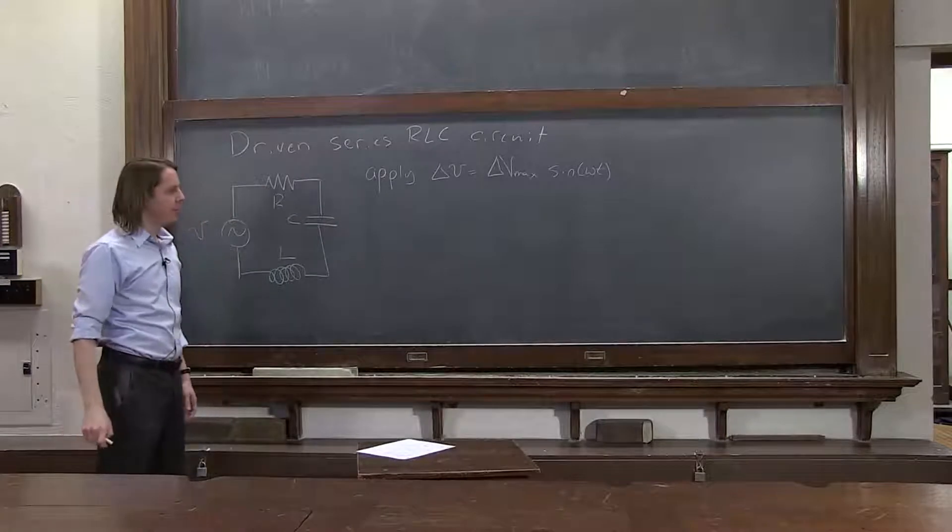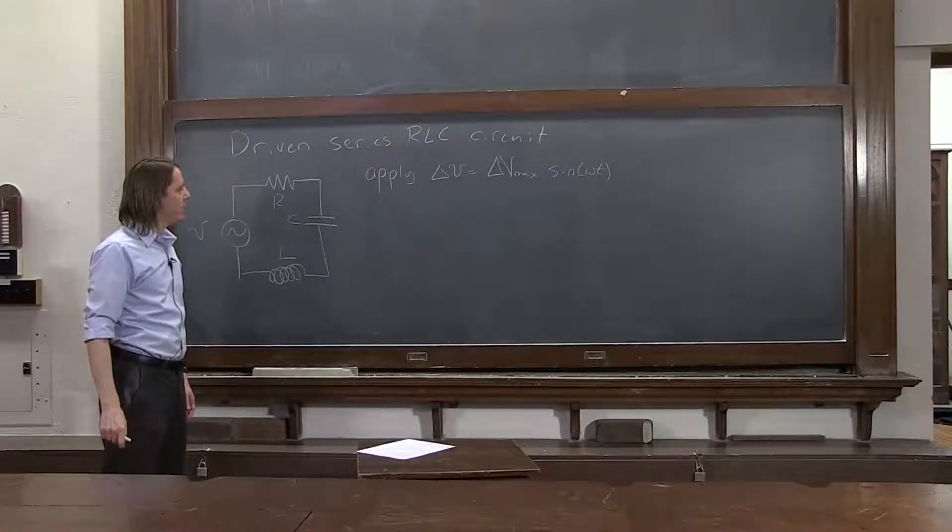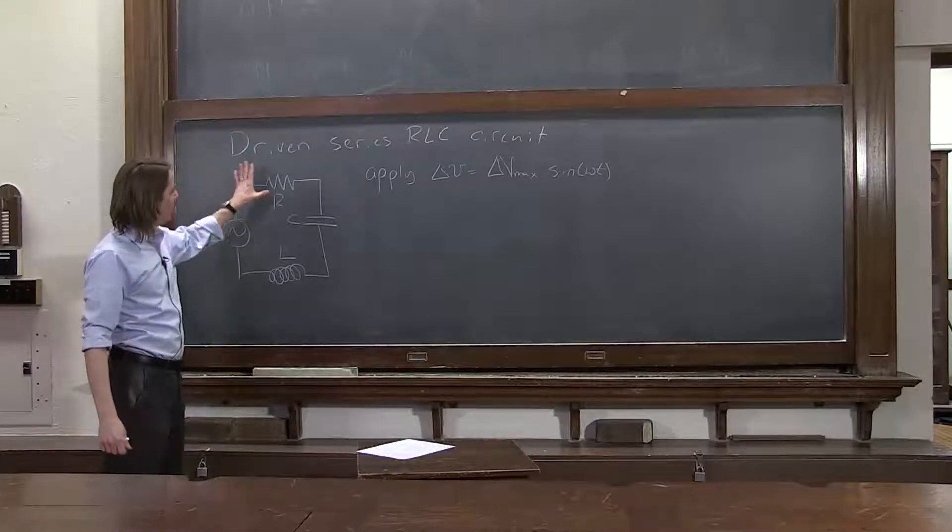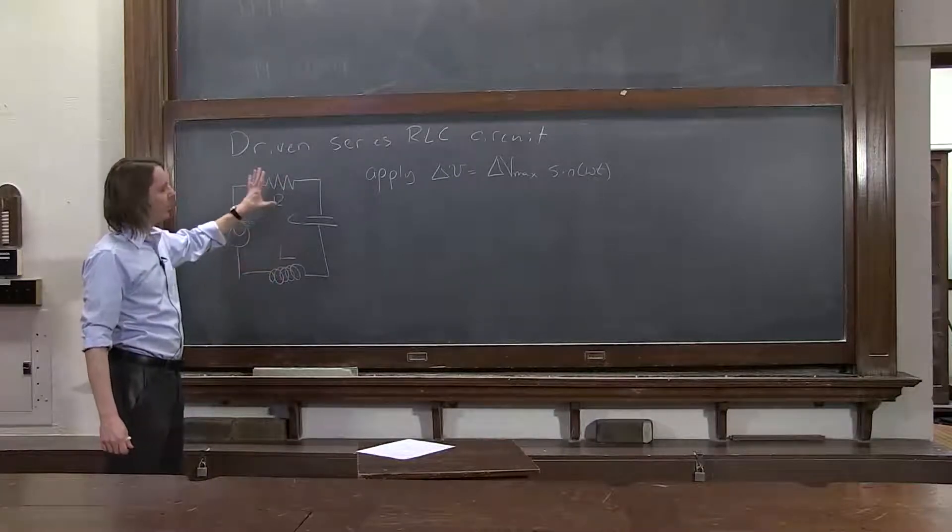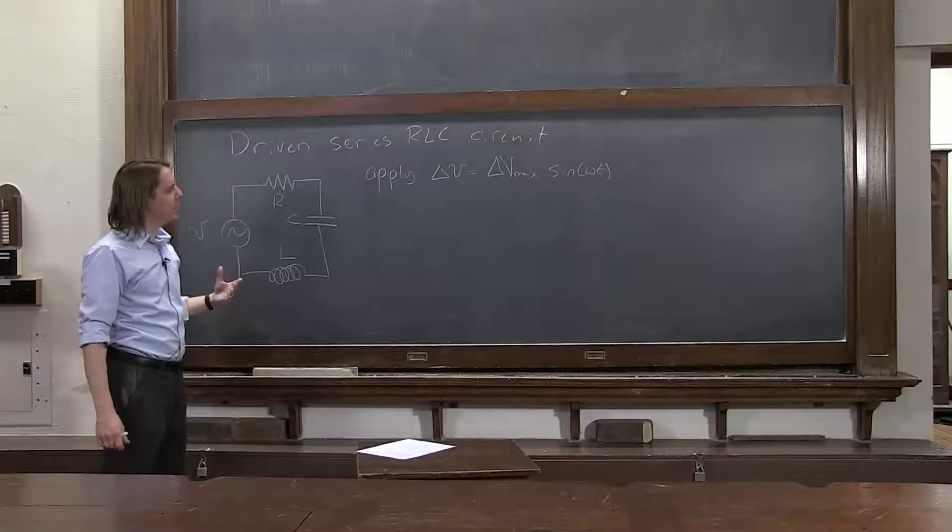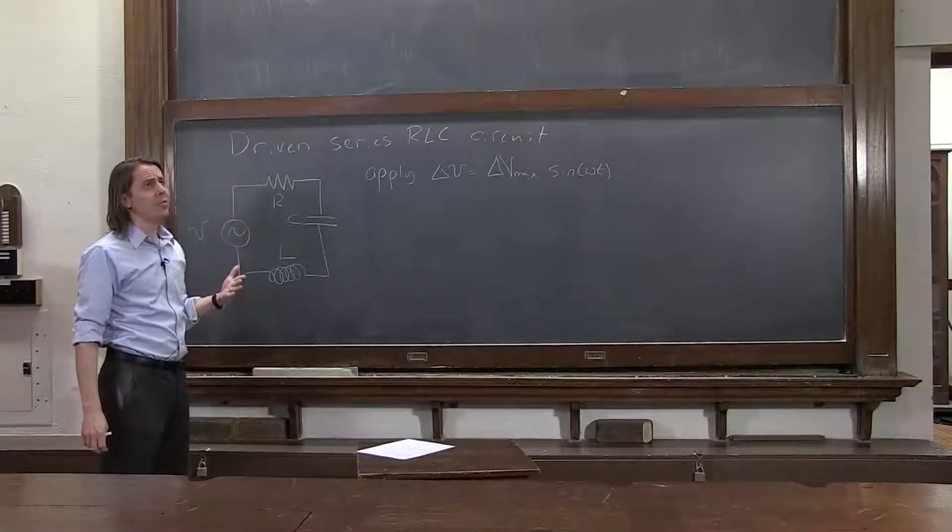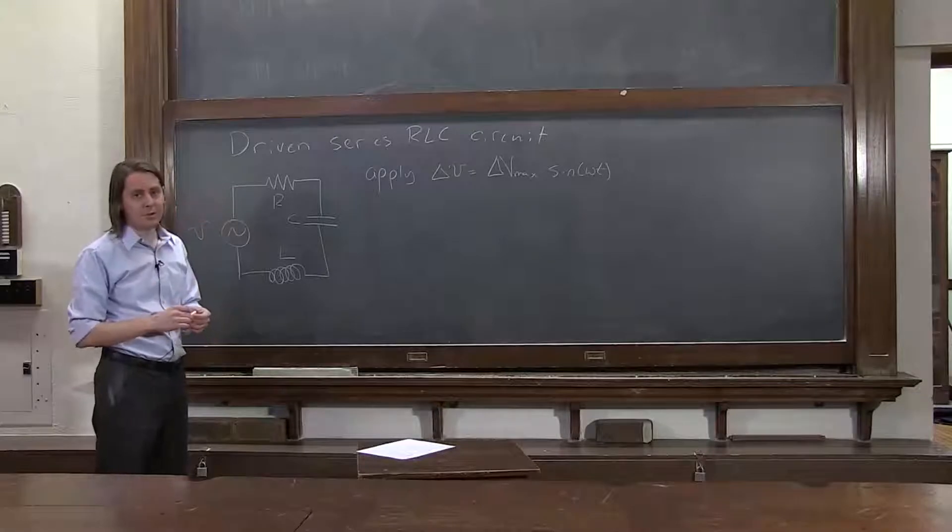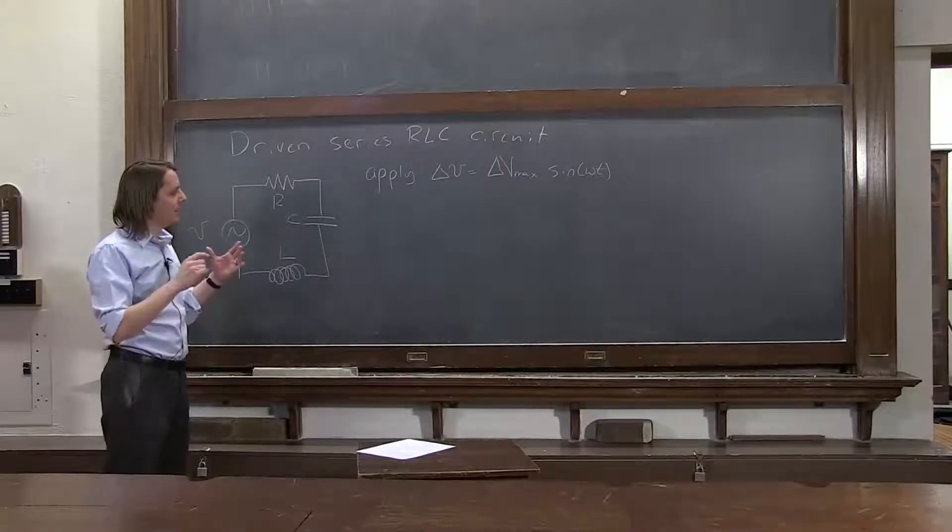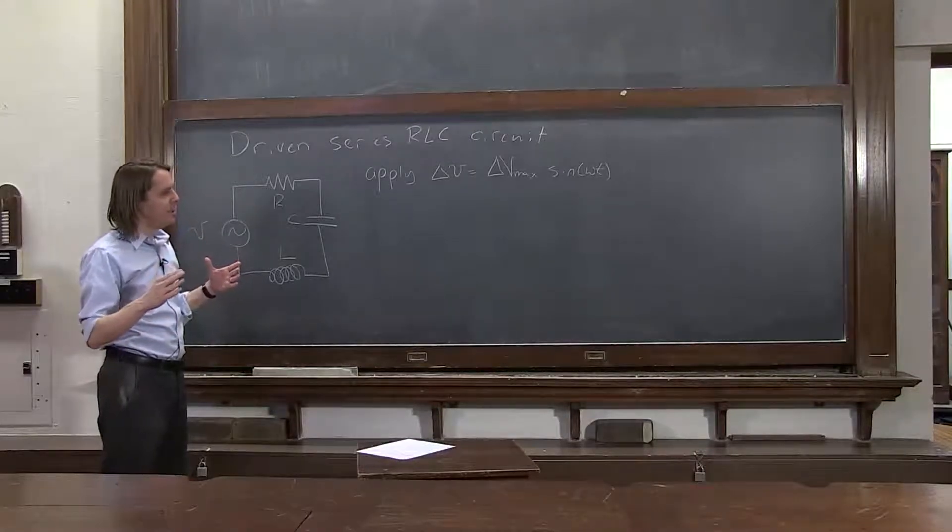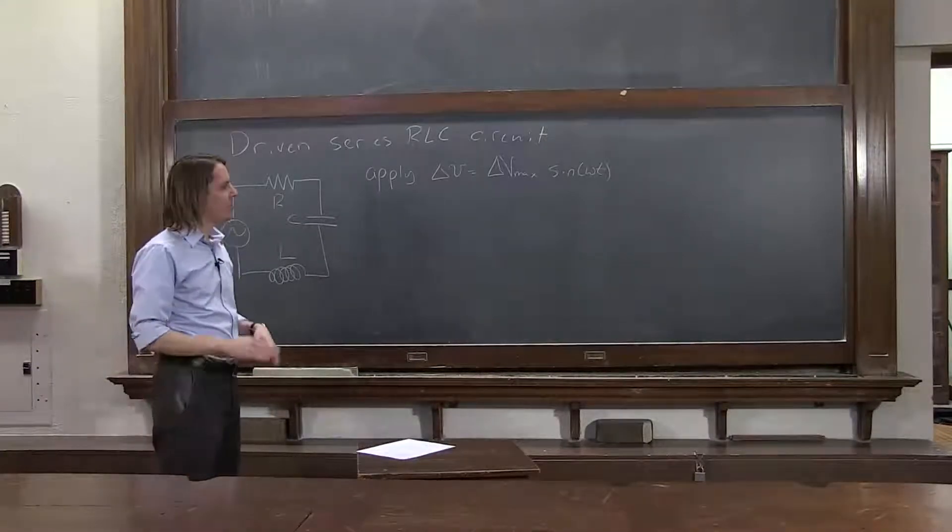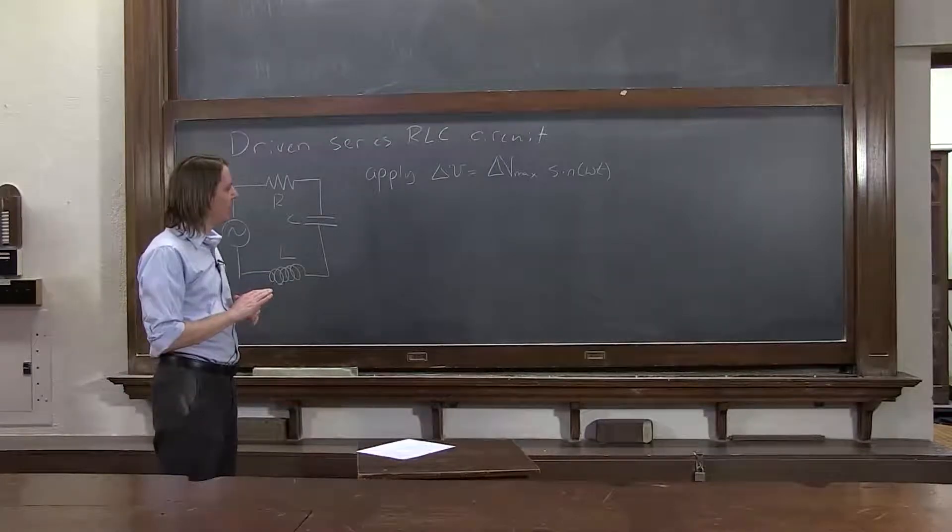And we're really just going to quote the result. From here, it's pretty complicated and a little bit beyond freshman physics. What we would do is set up the sum of all our potentials and get a differential equation similar to when we solved the RLC circuit without the drive, when we just saw that damped oscillation. It would be similar to that, except instead of being equal to zero, it would be equal to the drive potential. So there's ways to solve that in differential equations. We aren't going to do it now. I'm just going to tell you the result.